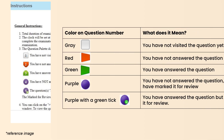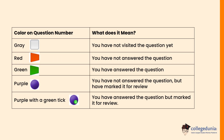Gray color represents that you have not visited the question yet. Red color represents that you have not answered the question. Green color represents that you have answered the question. Purple color represents that you have not answered the question but have marked it for review. Purple color with a green tick represents that you have answered the question but marked it for review.